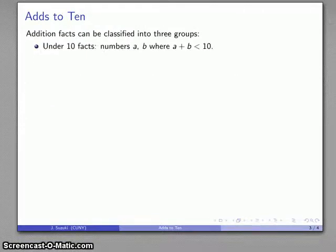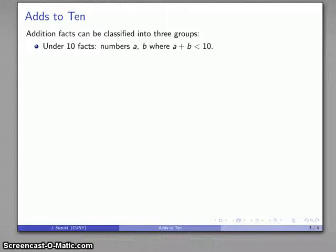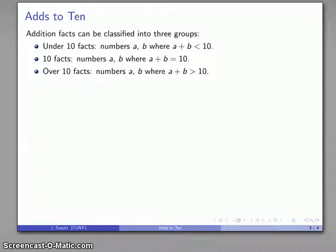If I take a look at addition facts, I can classify them into three groups: the under 10 facts where I add and get a number less than 10, the 10 facts where I add two numbers and get 10, and the over 10 facts where I add two numbers and get a number larger than 10.